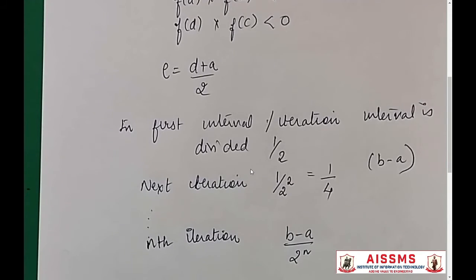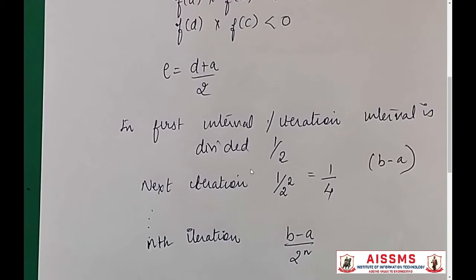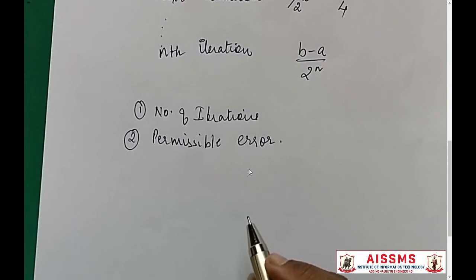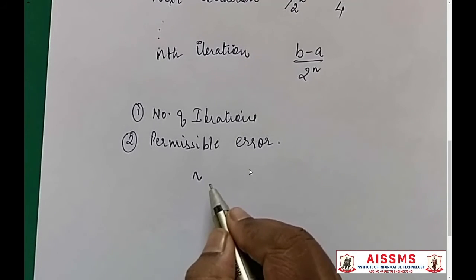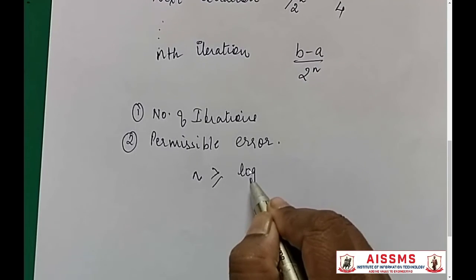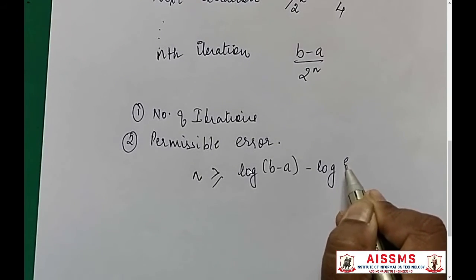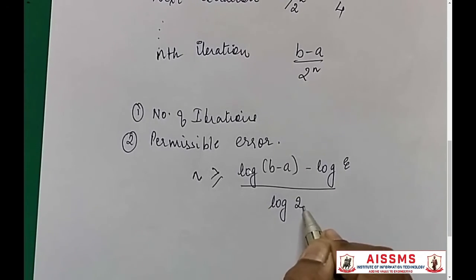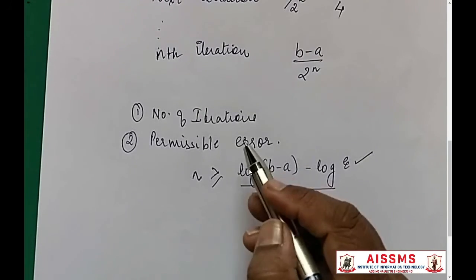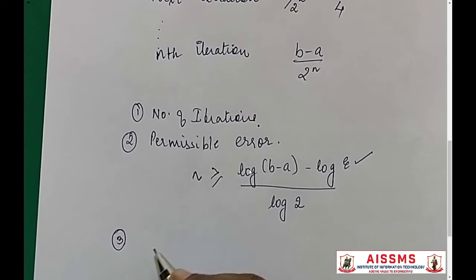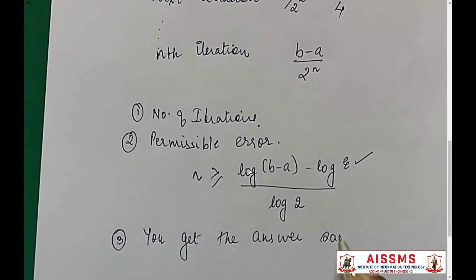How long do you continue this process? As I told you, it depends upon two factors: either you are given the number of iterations, or you are given the permissible error. The formula for finding the number of iterations is n ≥ (log(b − a) − log(ε)) / log(2), where ε is the permissible error. You can also stop when you get the same answer for two consecutive iterations.